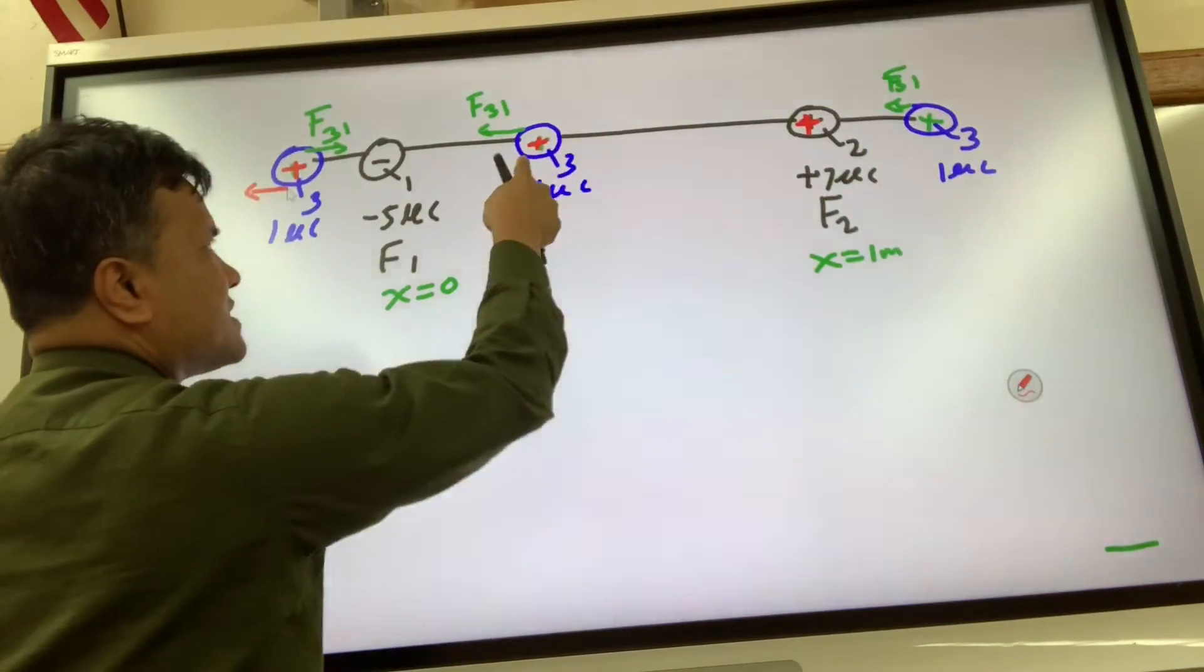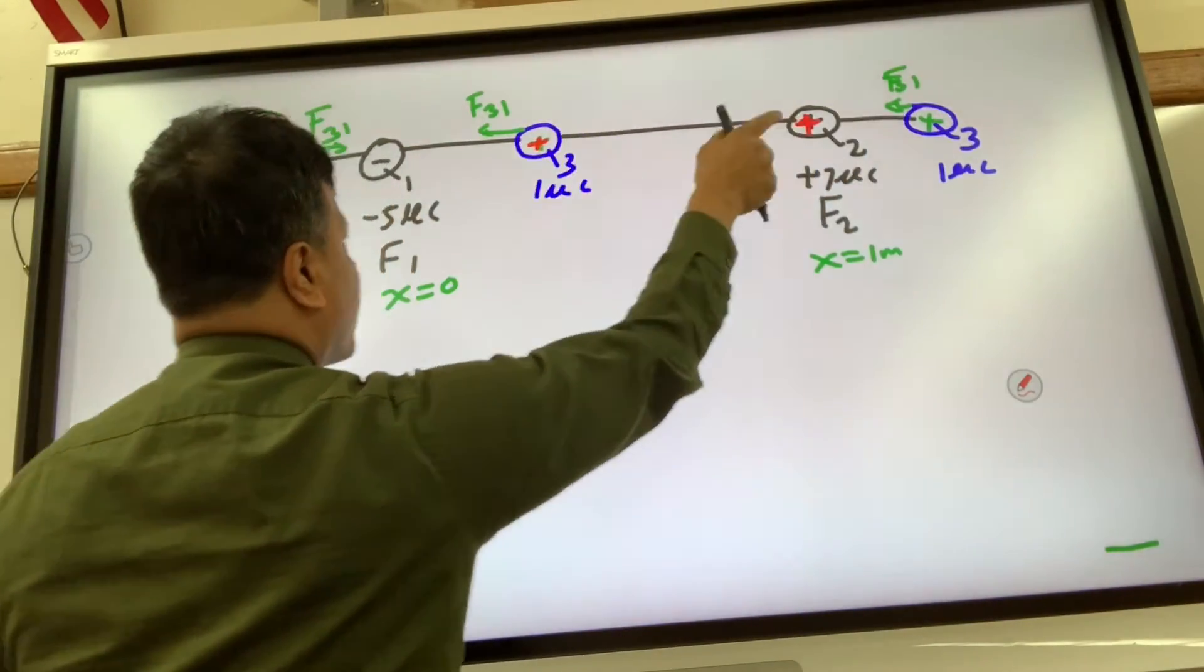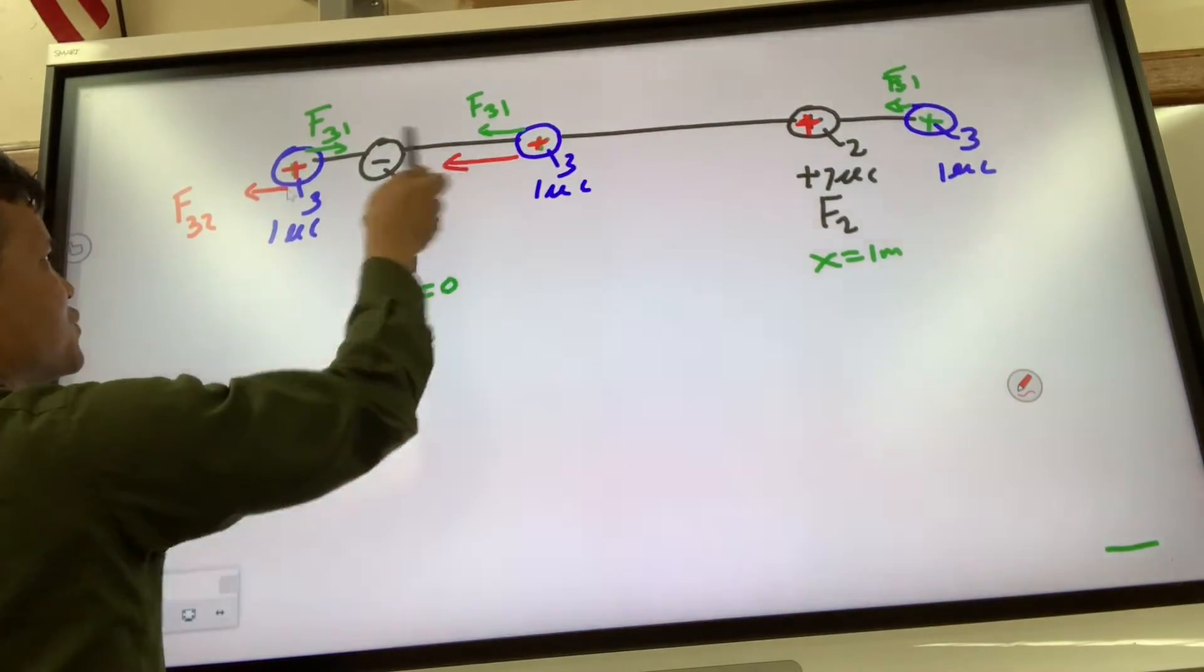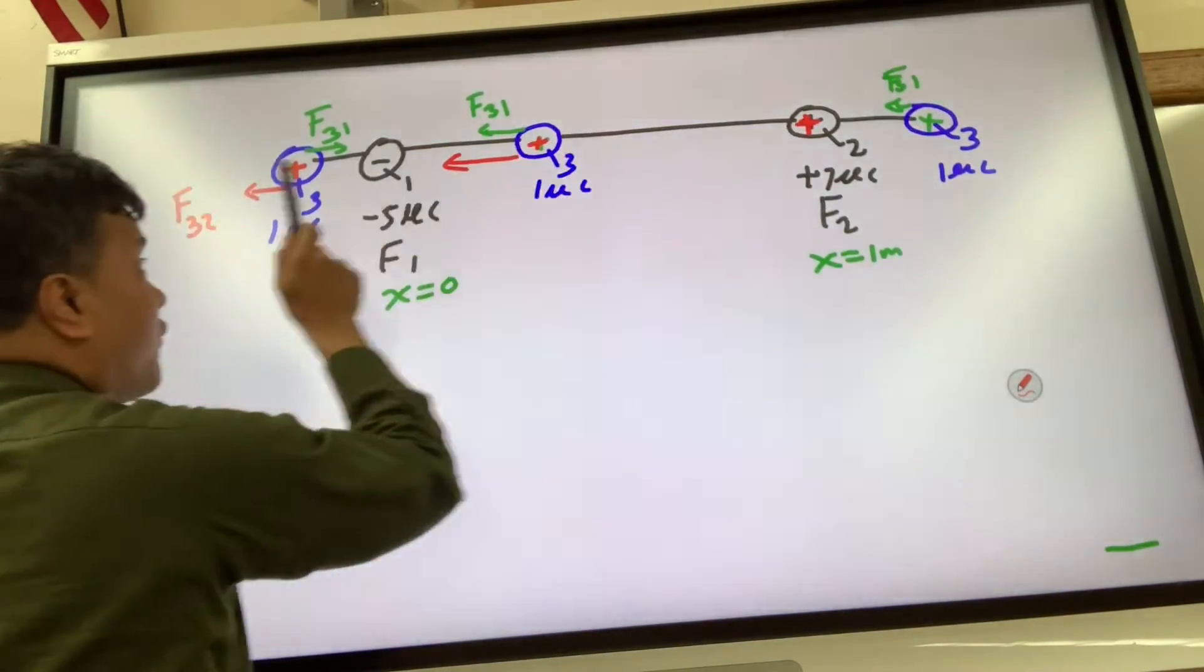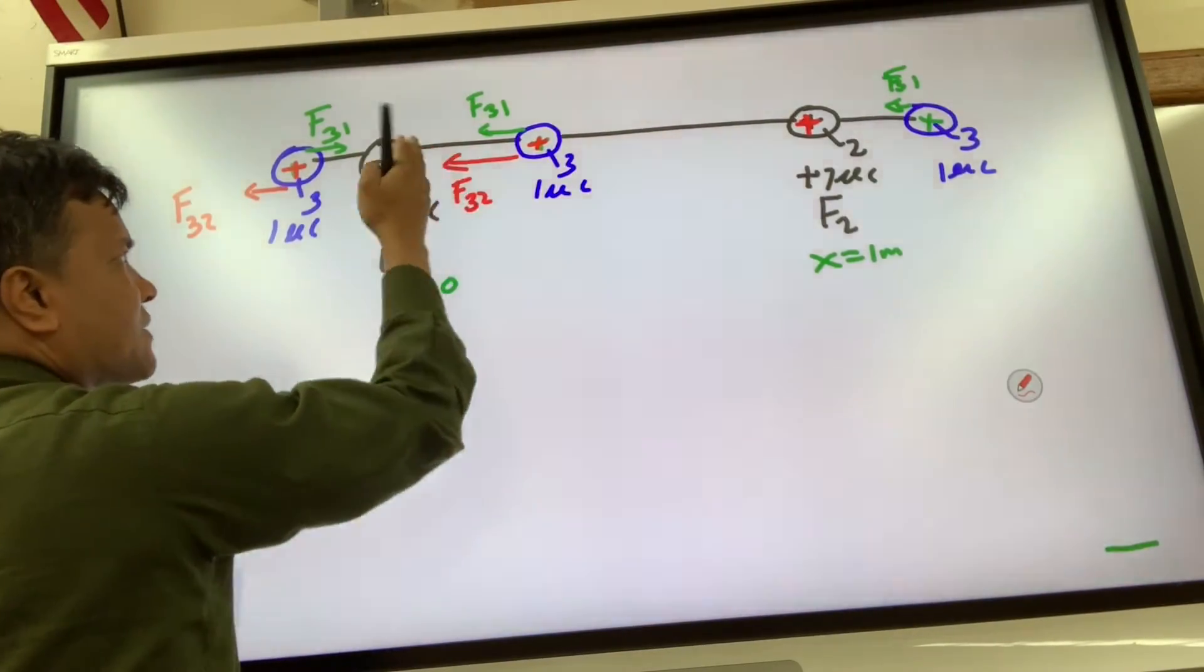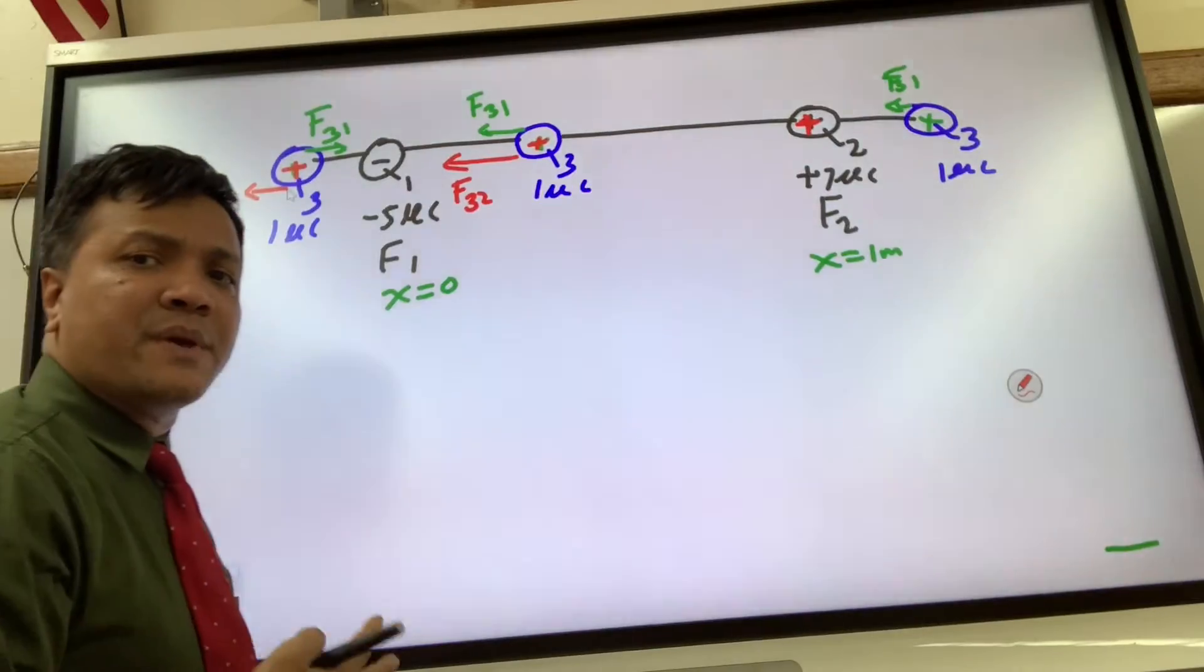Okay, now this one is positive, this one is also positive, so they must repel. But this is not that much distance, so this one should be bigger. This one should be bigger than this one because this one is farther away, this one is closer, so the repulsiveness would be a little bigger.